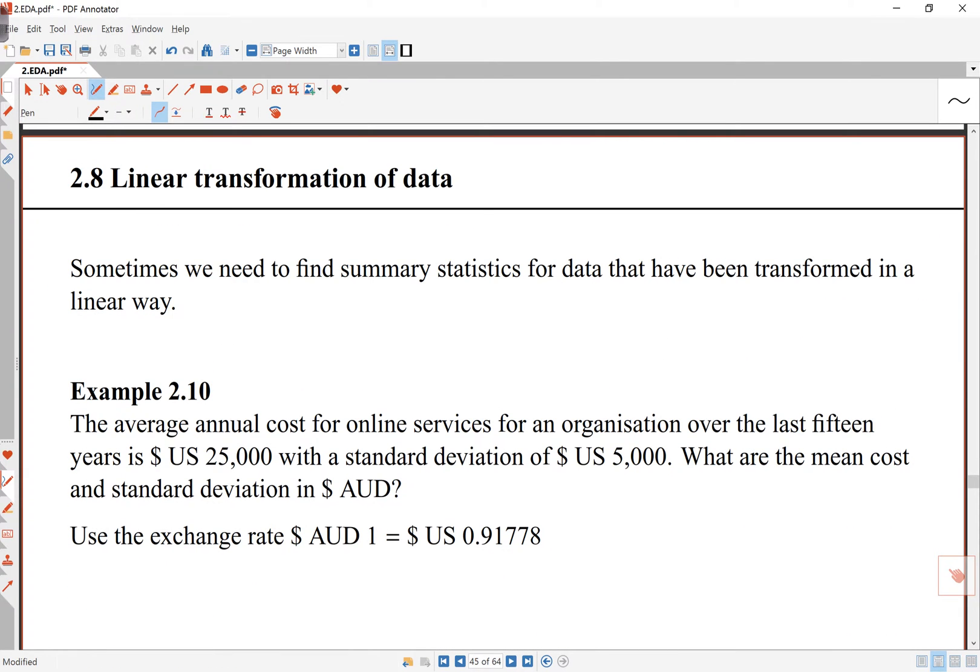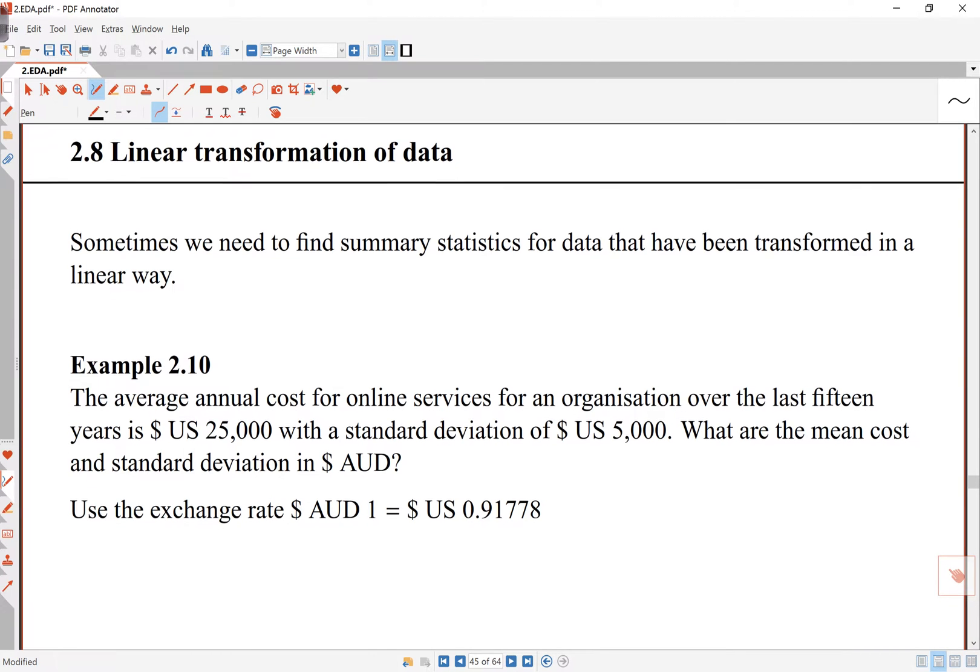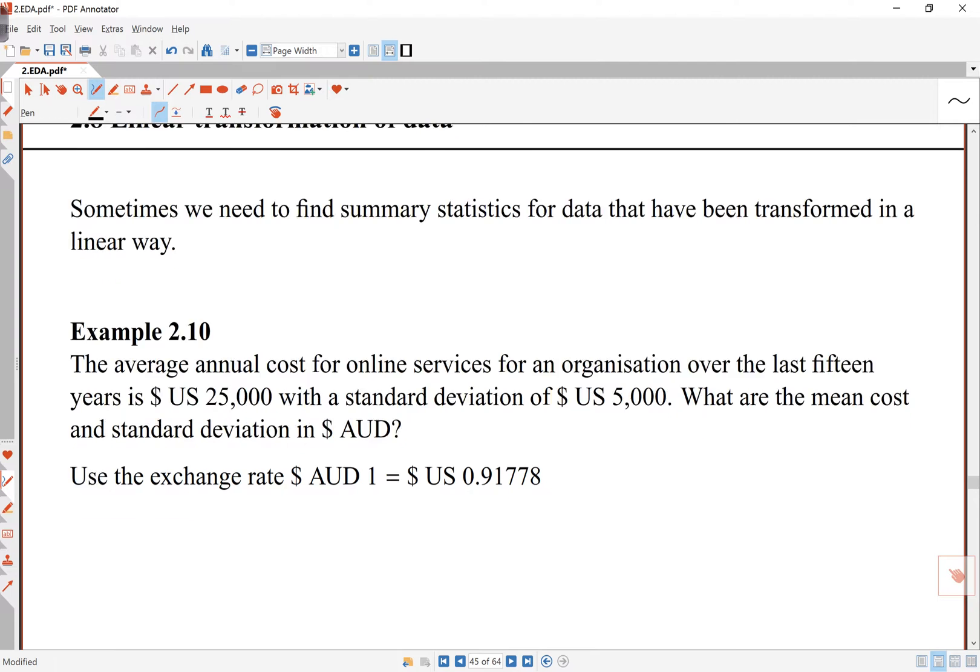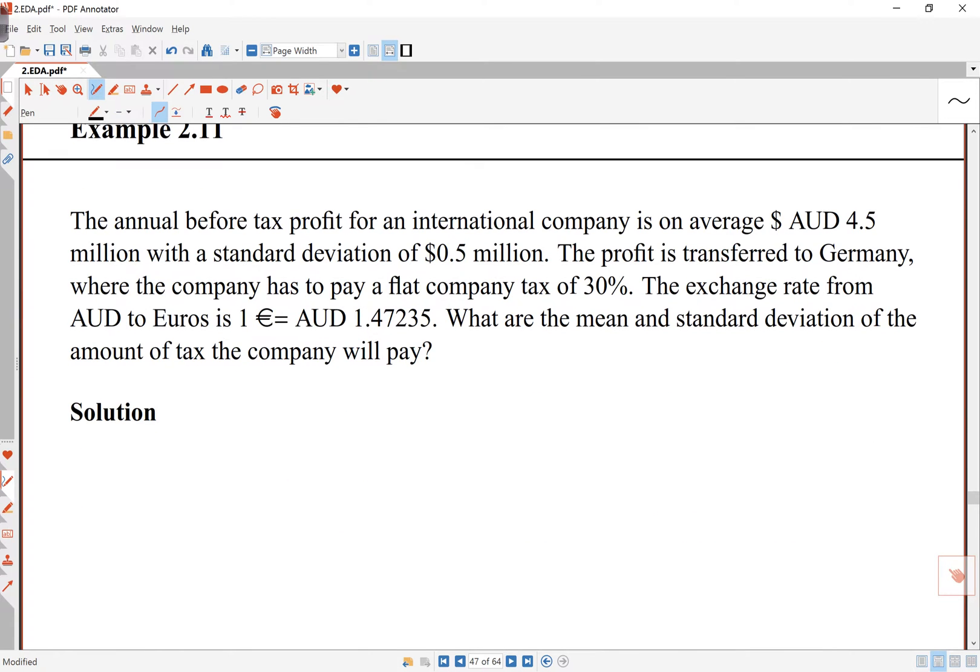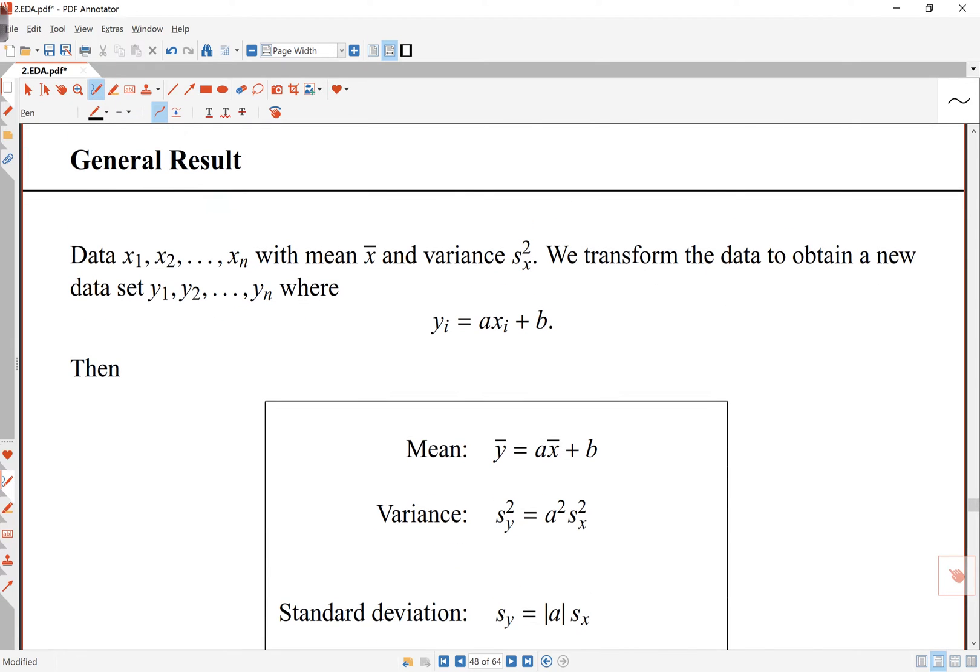Okay, so just quickly we'll look at some transformations of data as well. The basic rule that follows is that if I've got data x1, x2 up to xn, and it has mean x bar and variance s squared, I transform the data, so I use some kind of functional formula. So the new data, yi's, are just some number a times xi plus some number b. So what I'm doing is doing some transformation of data.